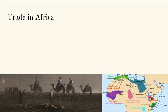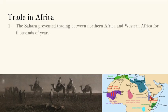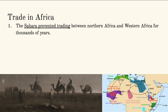Trade in Africa: the Sahara is going to prevent trading because it's really hard to cross if you don't have a way to get across safely while carrying things like water and food. If you get lost, it's just impossible to survive. Basically, Northern Africa and Western Africa for thousands of years could not communicate with each other because the Sahara desert was placed right between them.